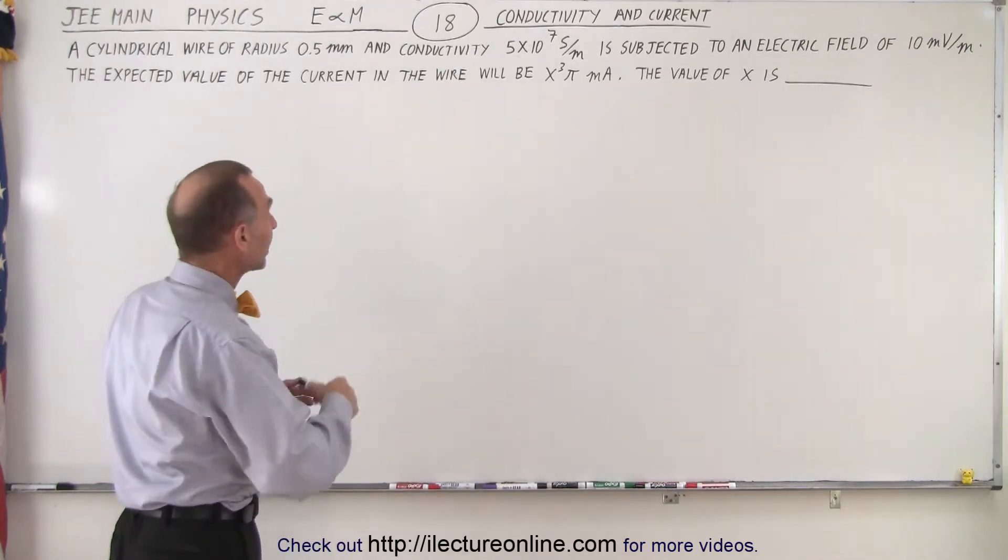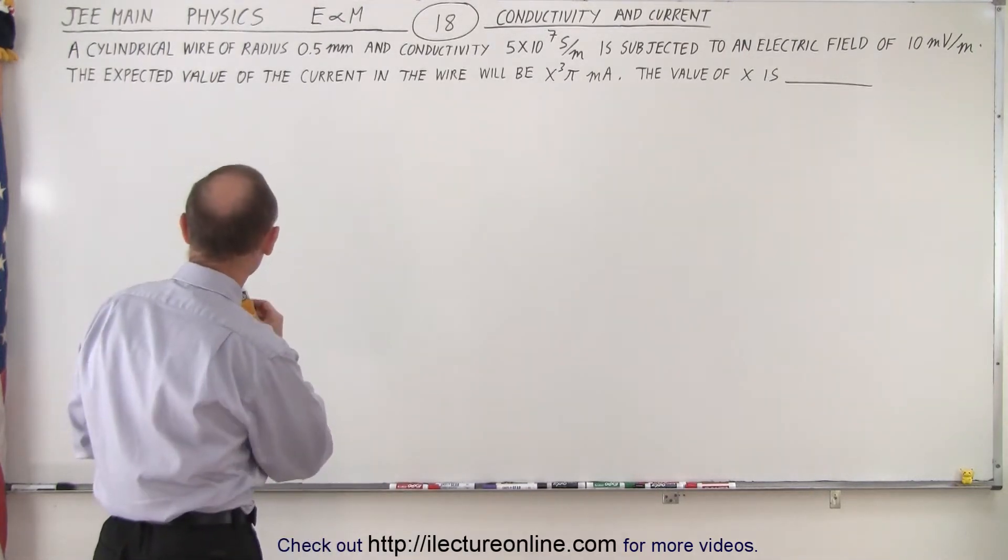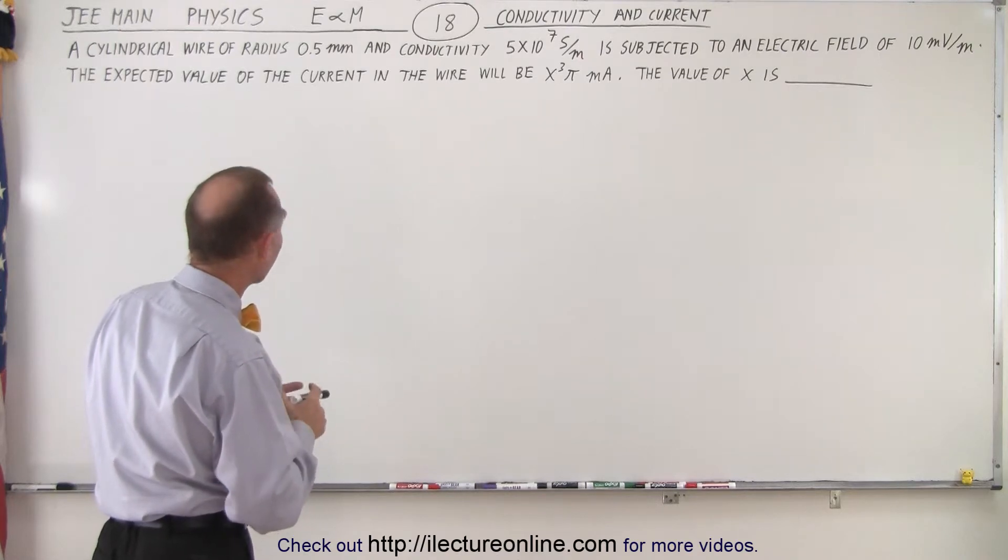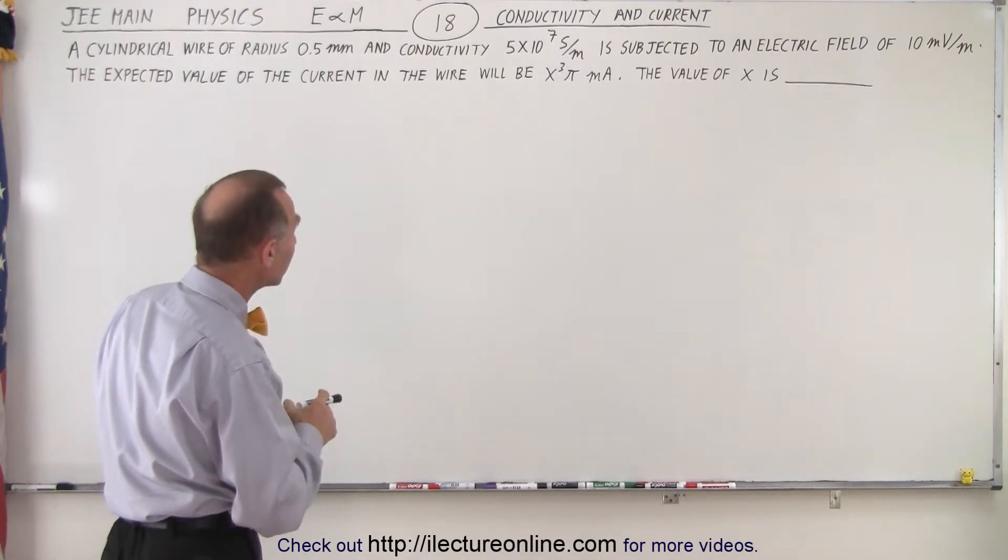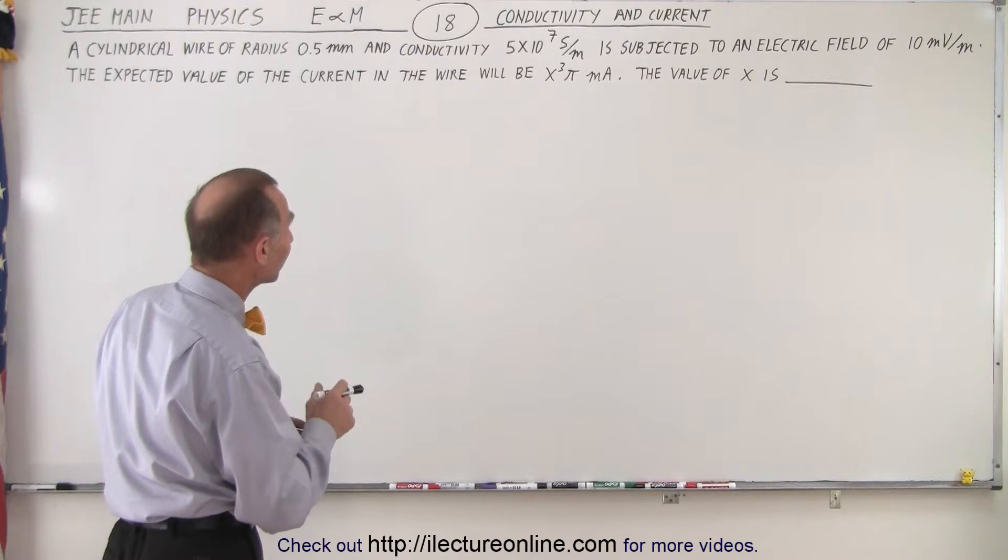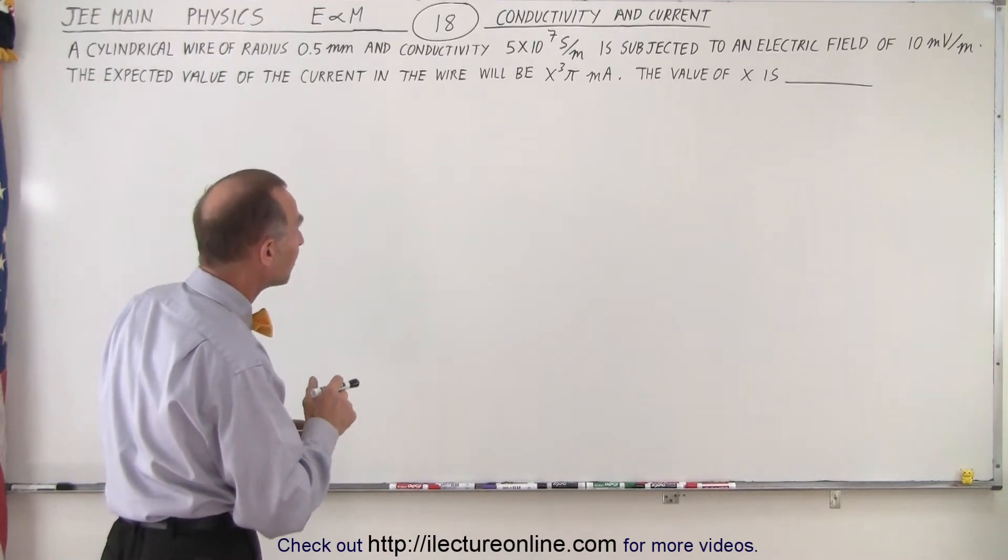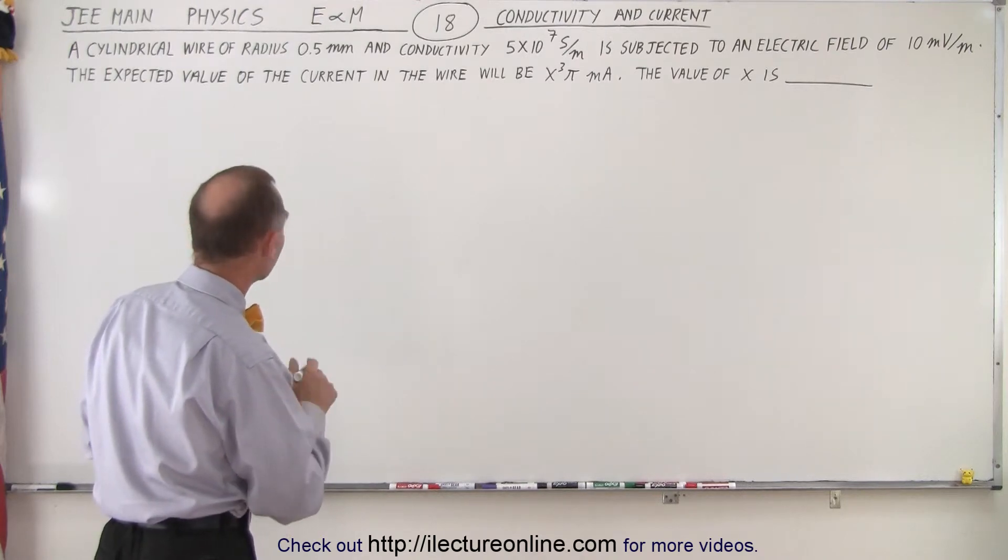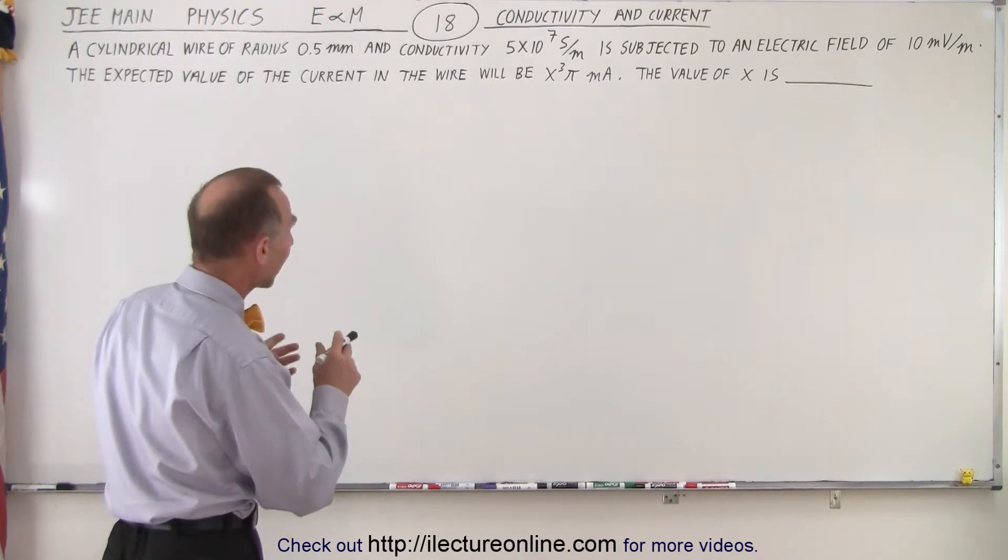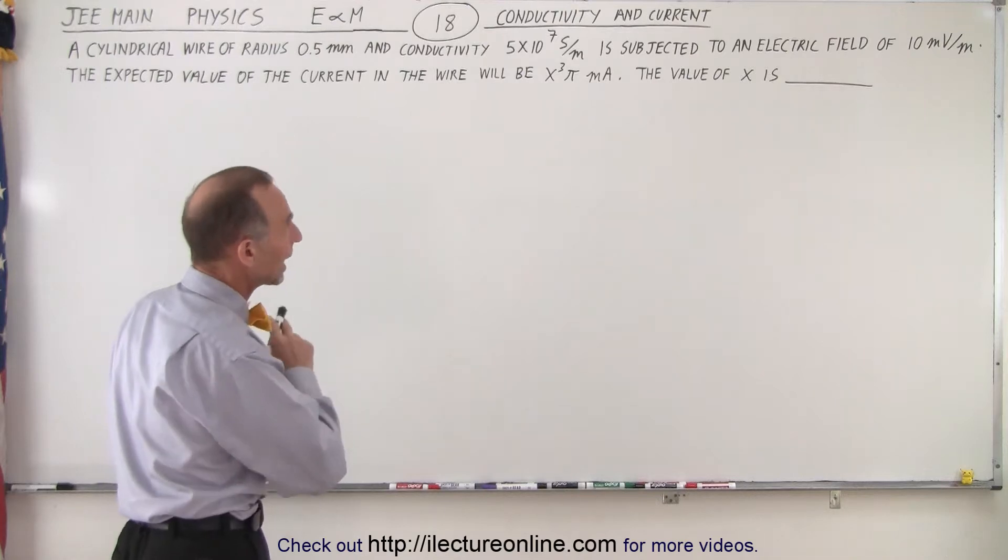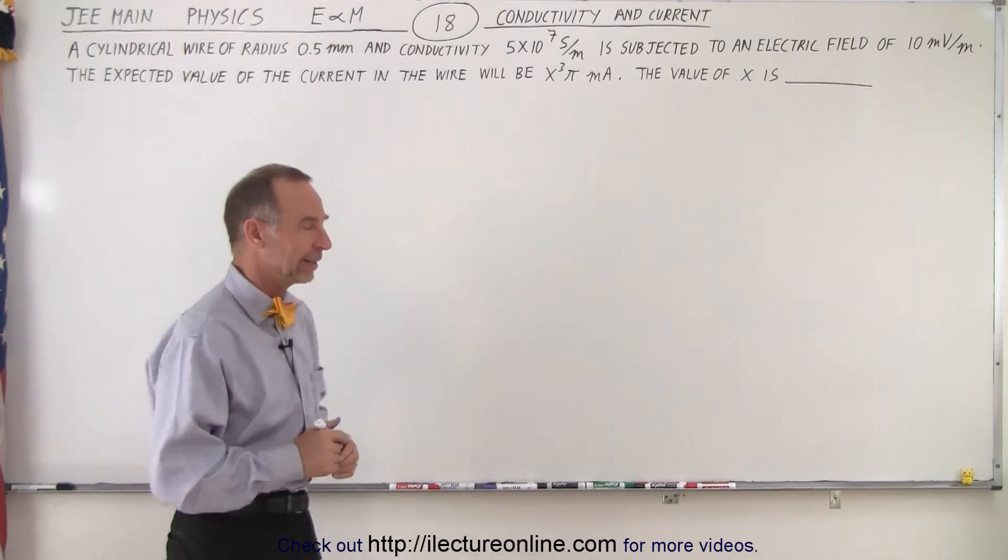It deals with conductivity and current. The question says a cylindrical wire of radius 0.5 millimeters and conductivity of 5 times 10 to the 7 Siemens per meter is subjected to an electric field of 10 millivolts per meter. The expected value of the current in the wire will be x cubed pi milliamps, and we're looking for the value of x.